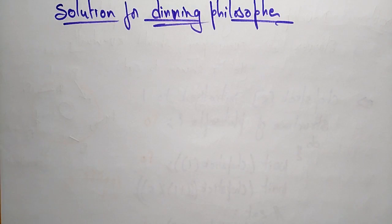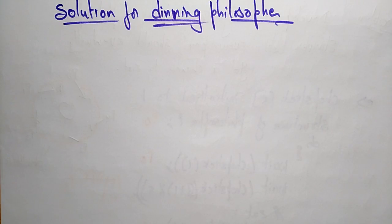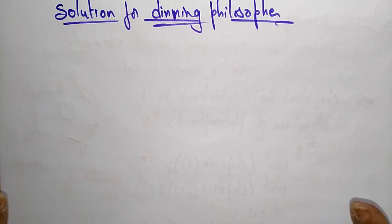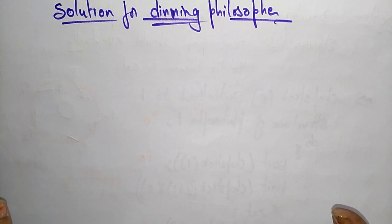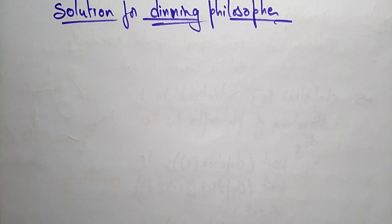Hi students, let us continue with the dining philosopher problem. In the previous video I explained how to solve the dining philosopher problem in the initial state using semaphore variables. If you solve it simply using semaphore variables, you may get a deadlock state — that deadlock condition may arise. Now let us see the solution for the dining philosopher problem.